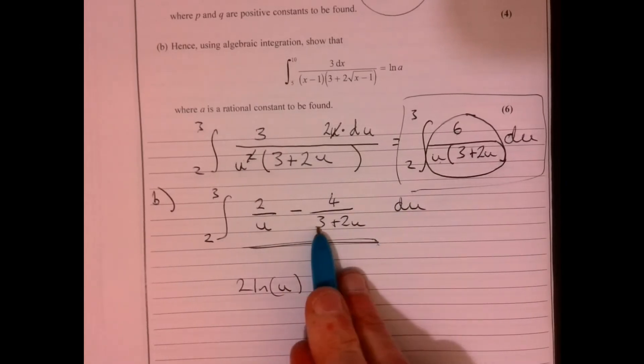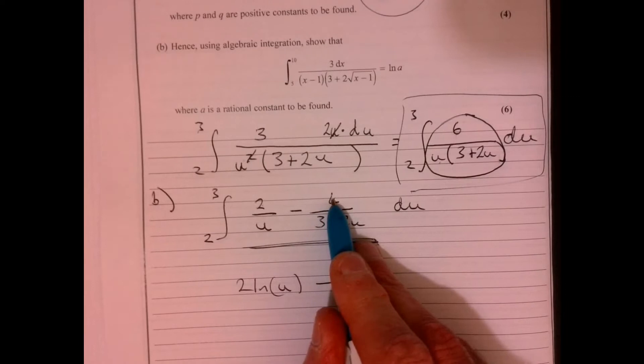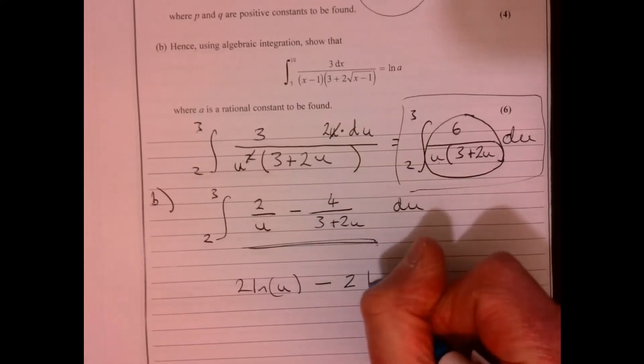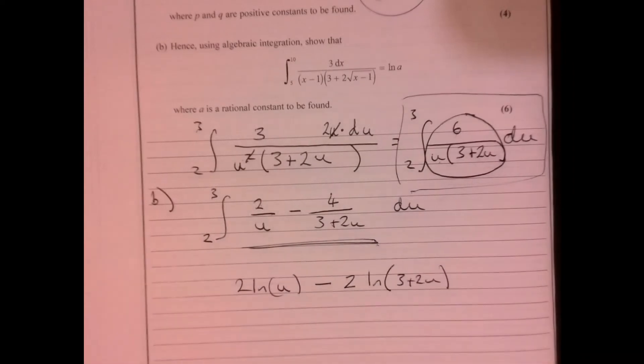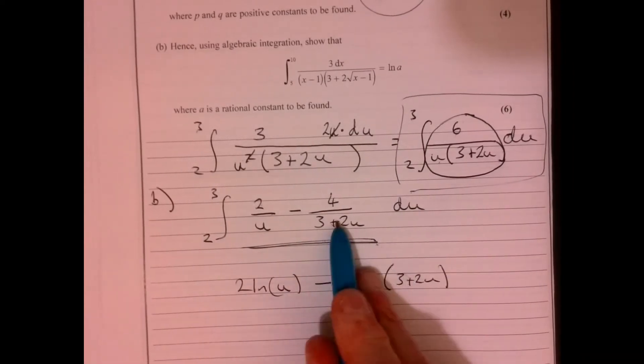And here, you should recognise if I differentiate this, it's two. So you should see that this is going to be two and then ln three plus two u. It's just getting practice and confidence at working with those.